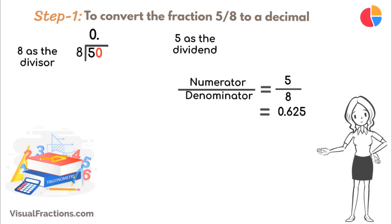8 goes into 5, 6 times, putting 0.6 in our quotient. Multiply 8 by 6 to get 48, and subtract this from 50, leaving a remainder of 2.